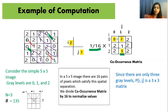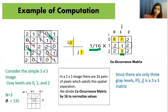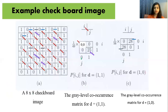This is how you compute the complete co-occurrence matrix. We divide by sixteen because there are sixteen pairs in the 5-by-5 image that satisfy the spatial separation for theta equals 135 degrees.